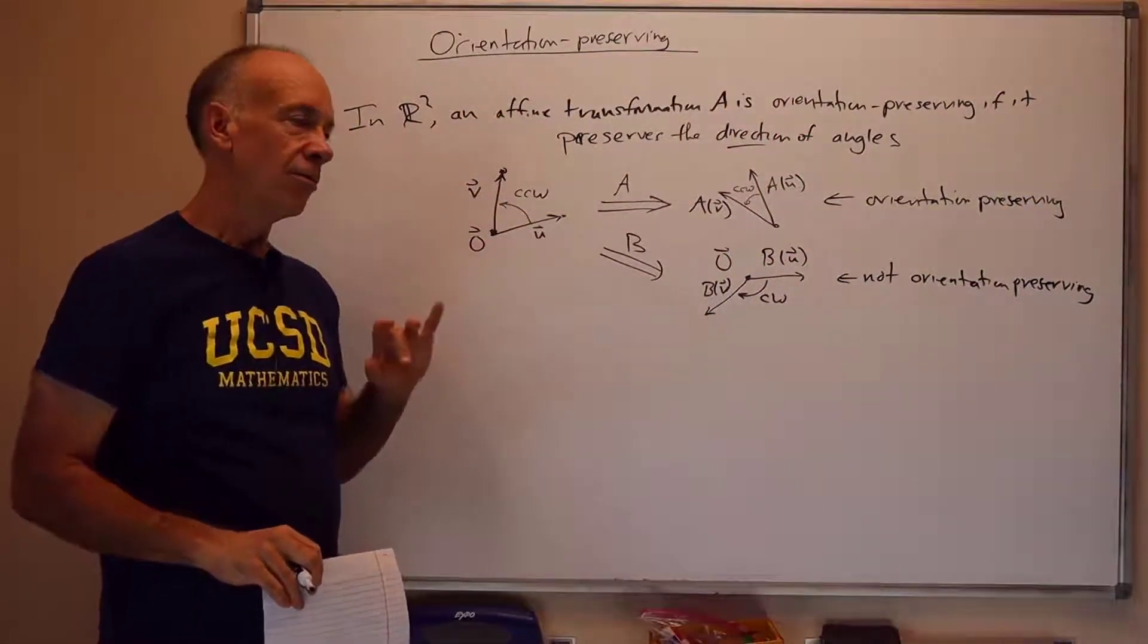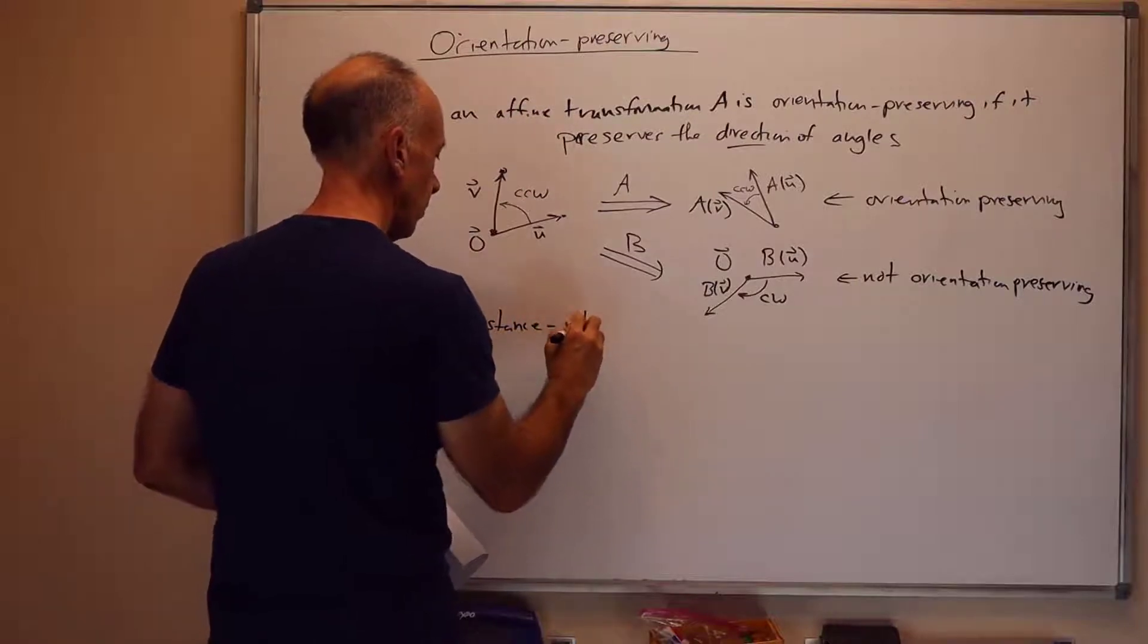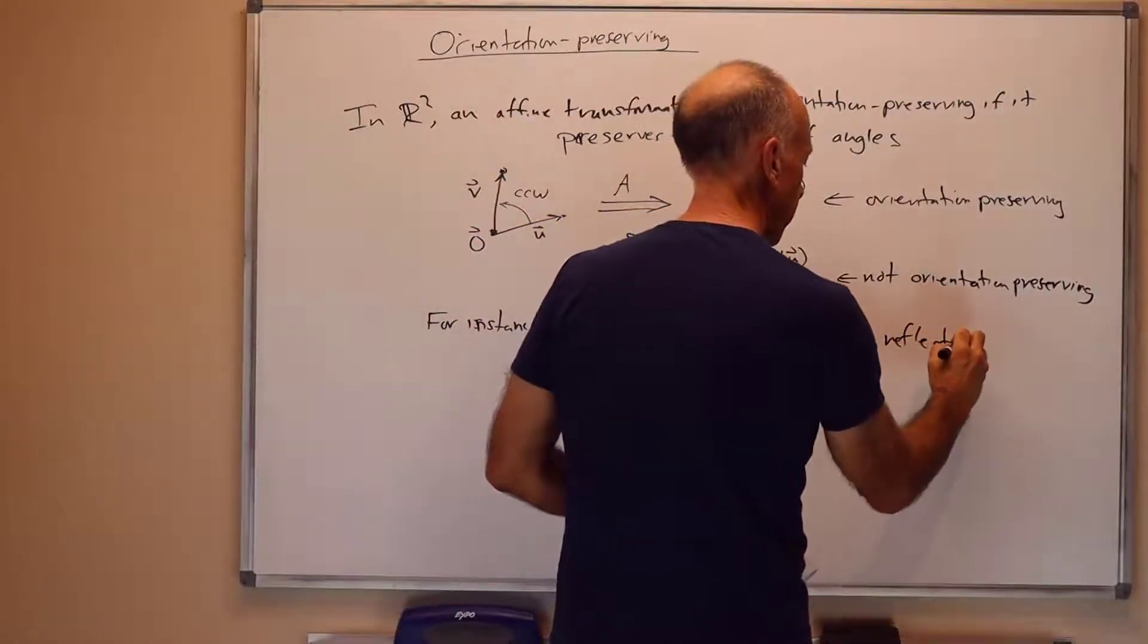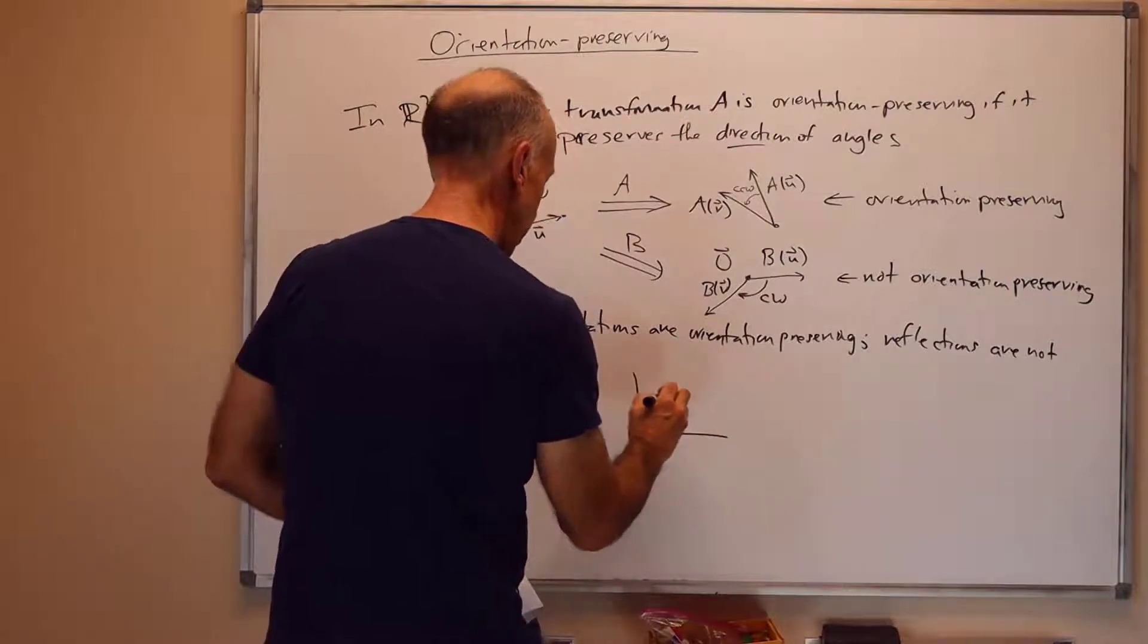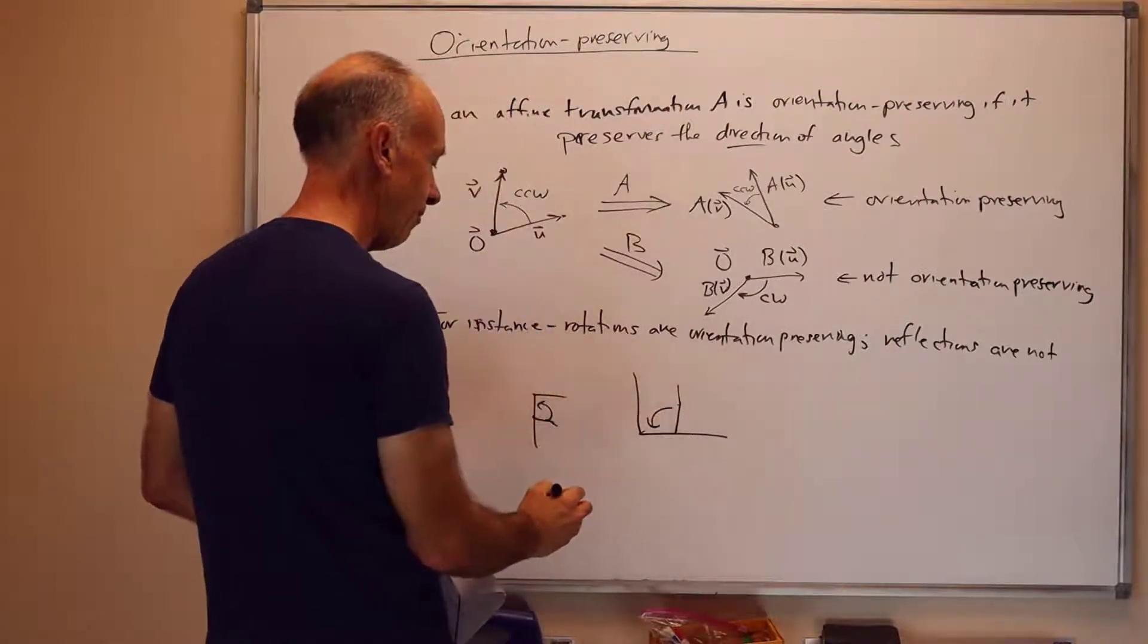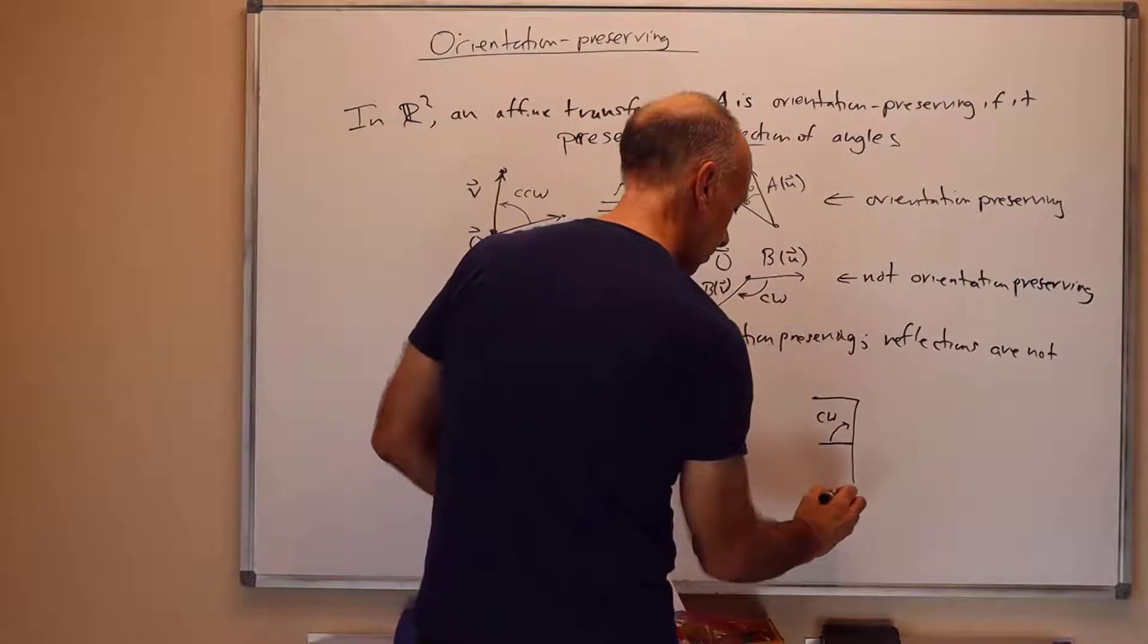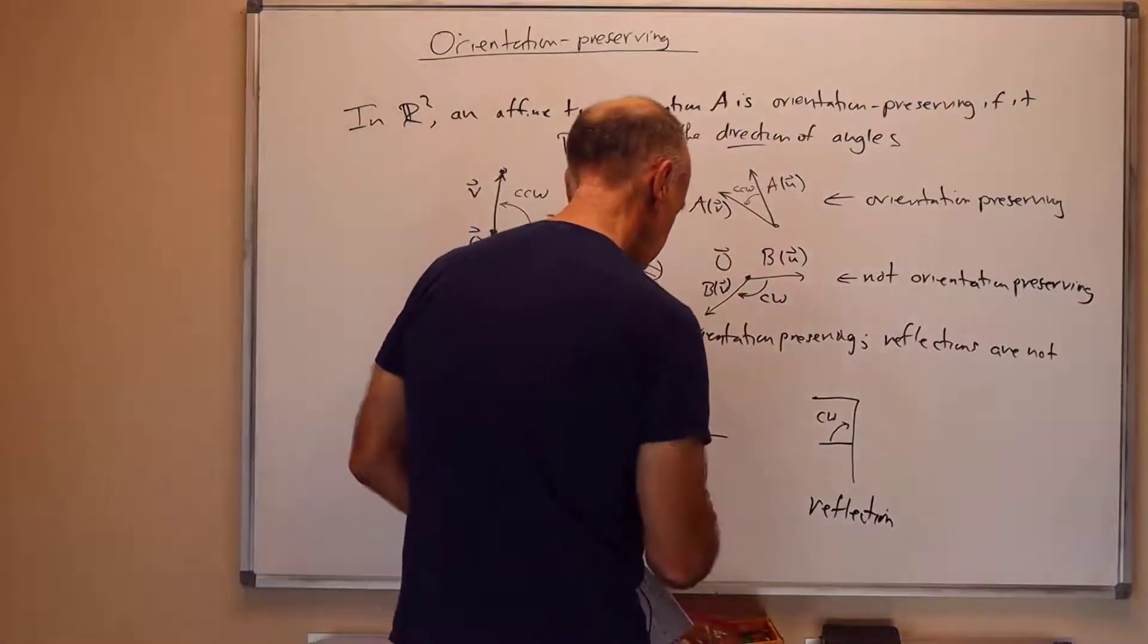For instance, rotations are orientation-preserving, reflections are not. And we can look at the F-shape here with rotation, say maybe the F-shape goes here, and then the counterclockwise angle from the arm of the F to the top of the F stays counterclockwise after the rotation. But, with a reflection, maybe the F looks like this. What used to be a counterclockwise angle now becomes a clockwise angle. So, this reflection is not orientation-preserving. This is a reflection across the y-axis. This rotation is orientation-preserving.